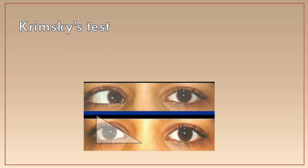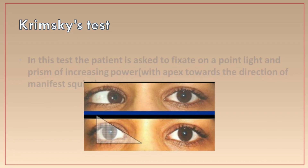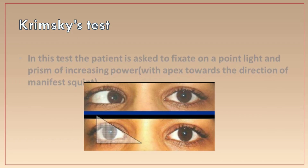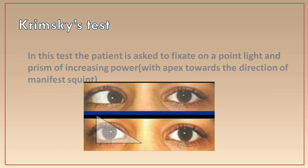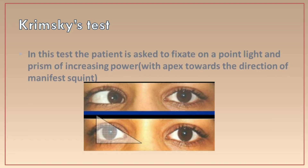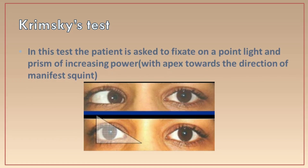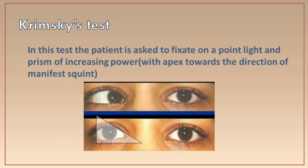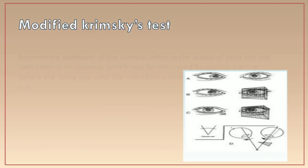If the light reflex is at the temporal margin of the limbus, it may be 45 degrees. Next is the Krimsky test. In this test, a prism is placed on the deviating eye with the apex toward the direction of deviation. The patient is asked to fixate on a point light, and the prism strength is slowly increased.